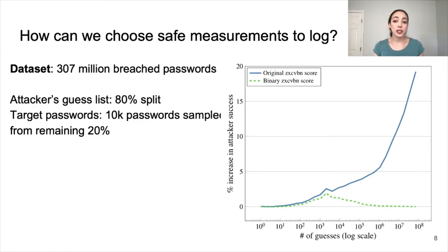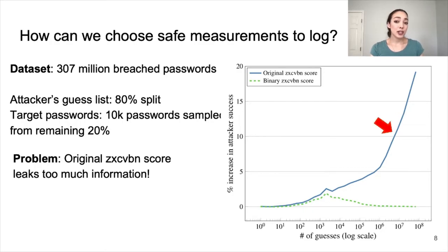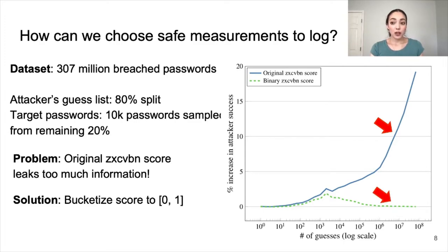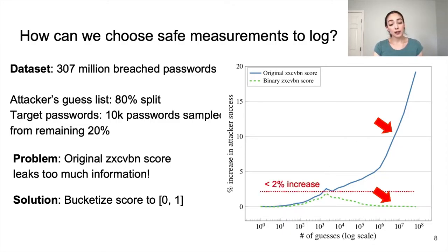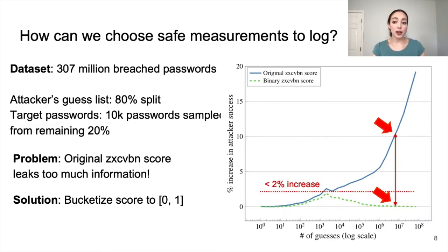We performed a simulation of this scenario using a breach dataset of 307 million passwords, where we took 80% as the attacker's guess list and sampled 10,000 of the remaining 20% as the target passwords. We graphed the percent increase in attacker's success from the baseline without any password-derived information. The solid blue line on the graph shows that the original zxcvbn score significantly increases attacker's success. So we tried bucketizing the score, which originally returned an integer between zero and four, to a binary zero or one. As shown by the green dashed line, the binary zxcvbn score never allowed an increase in attacker's success of over 2%, and past 100,000 guesses, there was an improvement of less than 0.1%. In other words, already weak, easily guessable passwords may be guessed, but stronger passwords will not be more easily guessed. So in this case, we chose to log the binary score to satisfy our design principle of bounded leakage logging, and we repeated this simulation for other password-derived measurements.